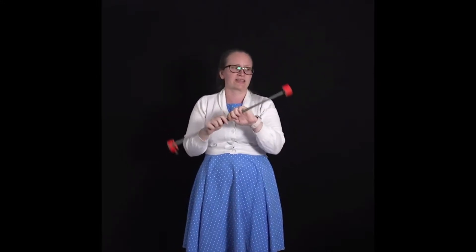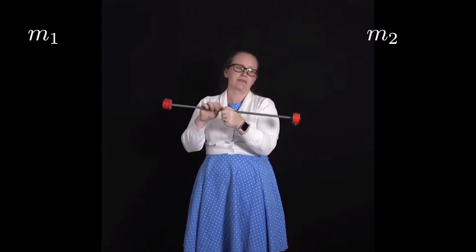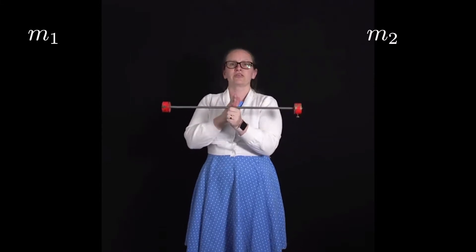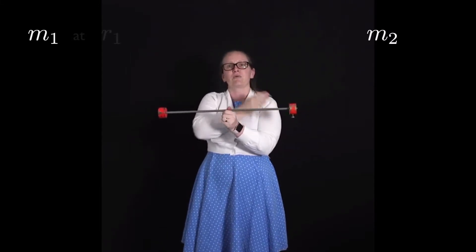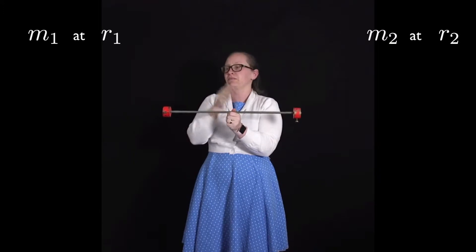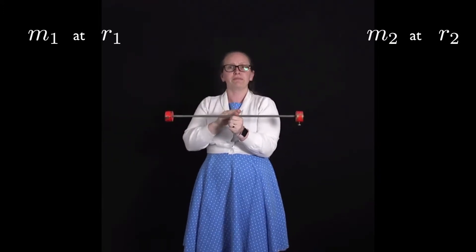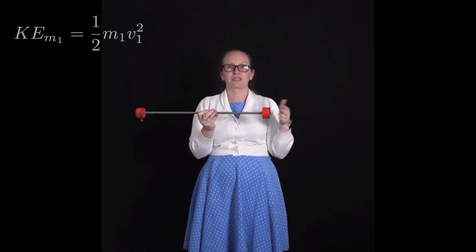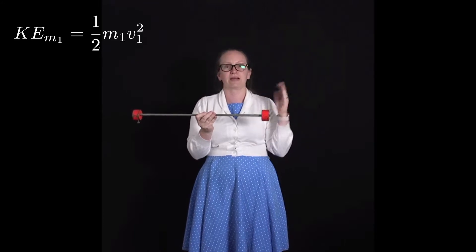Let's look at how we can calculate the size of this kinetic energy. Consider just one mass — call it mass one — and on the other end we have mass two. Let's call the distance from the pivot point to mass one r₁, and the distance from the pivot point to mass two r₂. When it turns, mass one has kinetic energy given by ½ m₁ v₁².